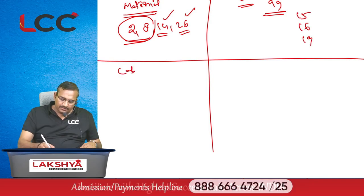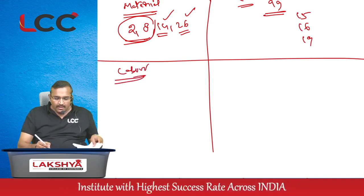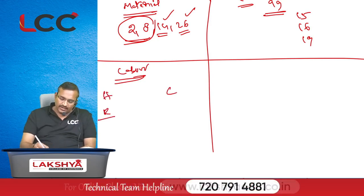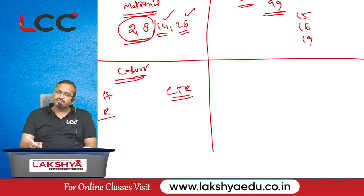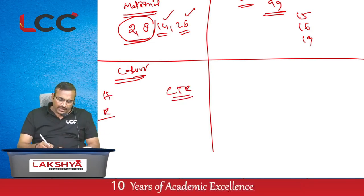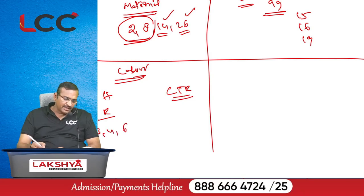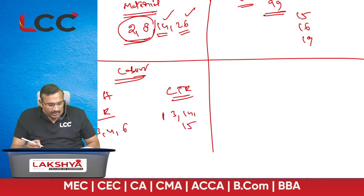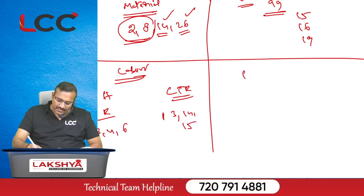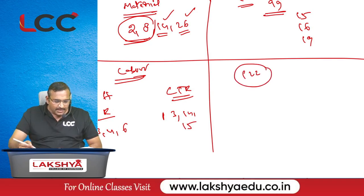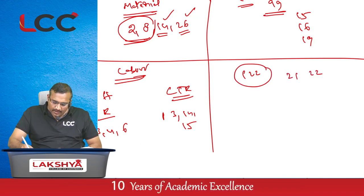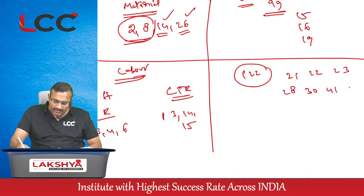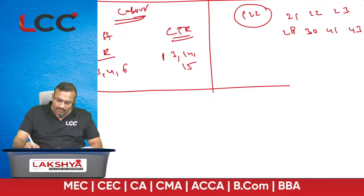Coming to the labor chapter, two models are important from the examination point of view: Halsey and Rowan, and labor turnover. From our lecture material, question number 3, question number 4, and question number 6 are labor turnover related questions. Question number 13, 14, and 15 are also relevant. From the CMA study material, page number 122: question number 21, 22, 23, 28, 30, 41, and 43.